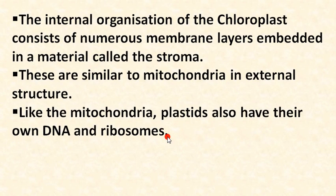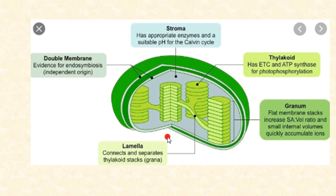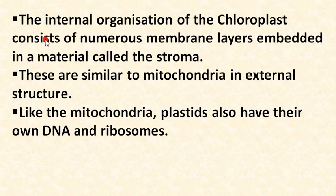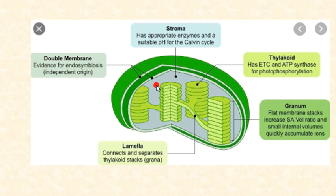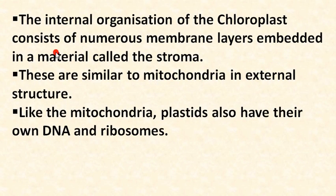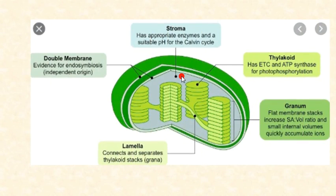The internal organization of chloroplast consists of numerous membrane layers embedded in a material called stroma. Looking at the chloroplast diagram, the outer layer and inner light-blue region is the stroma, which contains appropriate enzymes and a suitable pH for the Calvin cycle. The structure is similar to mitochondria in external organization.